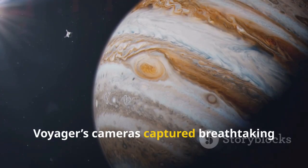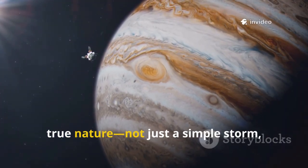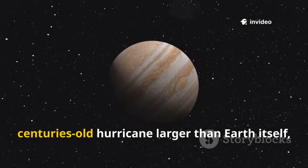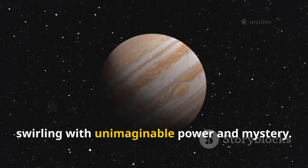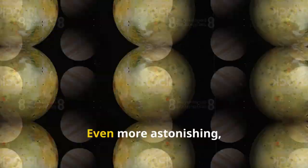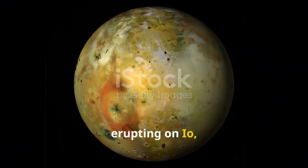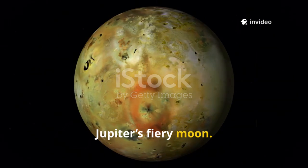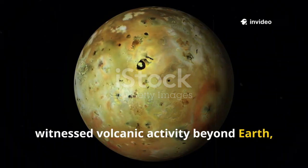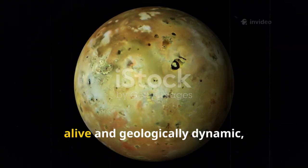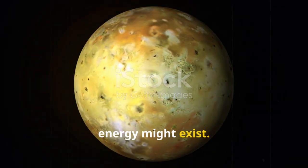At Jupiter, Voyager's cameras captured breathtaking images and revealed the great red spot's true nature: not just a simple storm but a vast centuries-old hurricane larger than Earth itself, swirling with unimaginable power and mystery. Even more astonishing, Voyager discovered active volcanoes erupting on Io, Jupiter's fiery moon. This was the first time we had ever witnessed volcanic activity beyond Earth, proving that distant worlds could be alive and geologically dynamic, reshaping our ideas about where life and energy might exist.